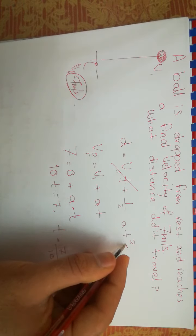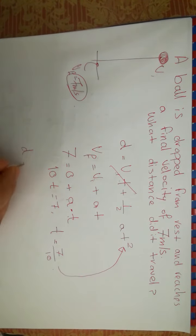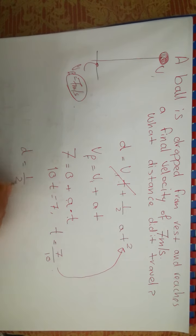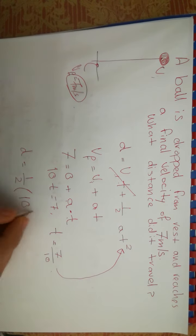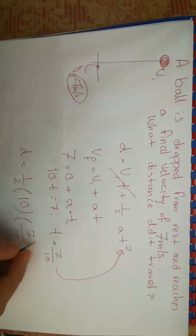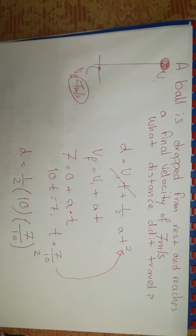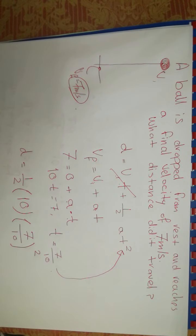And put it over here. And so you have the distance that this object has moved is equal to 1 over 2*a, which is 10, t squared, which is 7 over 10 power 2. And that will bring you the distance that this ball has fallen.